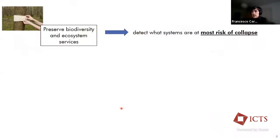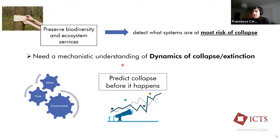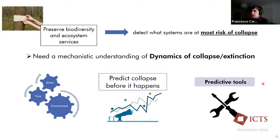Now, given that to preserve biodiversity and the ecosystem services that comes from biodiversity, we need to detect the systems that are most at risk of collapse, as Vasilis also was saying. And for doing that, we need this deep understanding of how the dynamics of collapse to extinction works, to be able to actually predict, before it happens, the collapse of the population, by trying to understand where, and especially when, to look before we meet a critical transition. And for doing that, we need to develop some predictive tools, as most of you guys know.